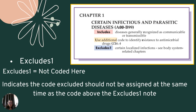Excludes one means 'not coded here.' It indicates the excluded code should not be assigned at the same time as the code above the excludes one note. For example, under certain infectious and parasitic diseases — Chapter 1 — it excludes certain localized infections; see the body systems chapters. When you see excludes one in your manual, it gives you directions to what chapter you need to look at.